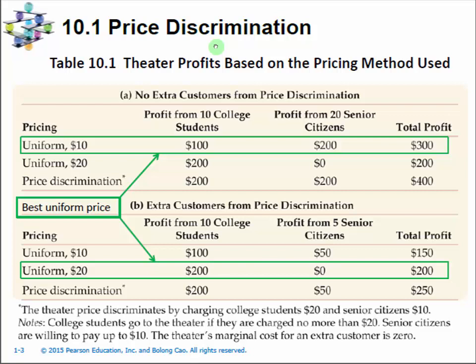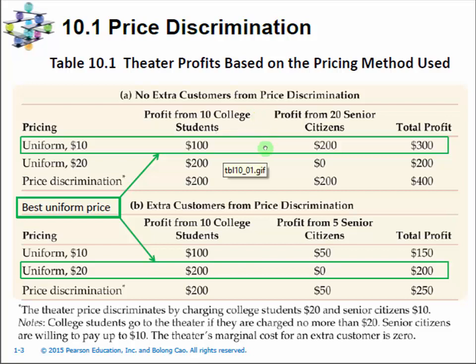In this first example, the problem we are examining is why price discrimination can make more money, or improve the profit, for firms with market power. There are actually two reasons. One is that the firm can get more money from consumers with higher willingness to pay — basically charging those customers who would like to pay a higher price, the higher price. The second way is to bring in more sales from the lower price charged to customers who have lower willingness to pay.